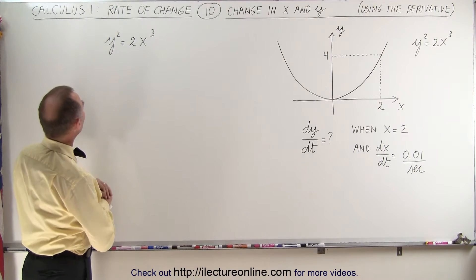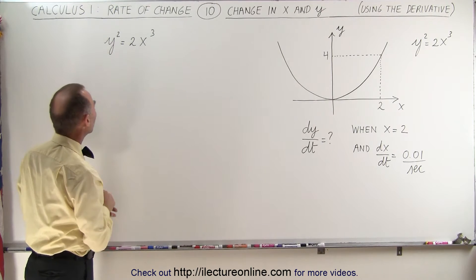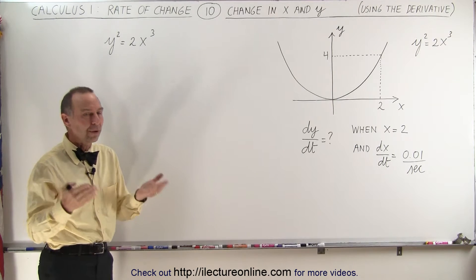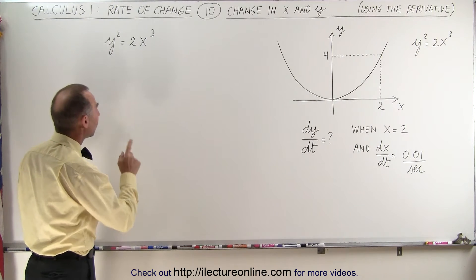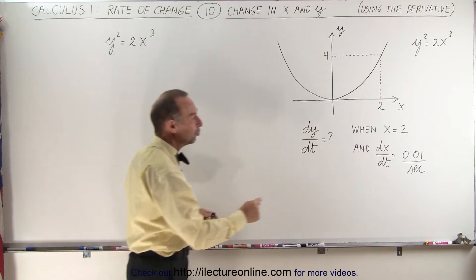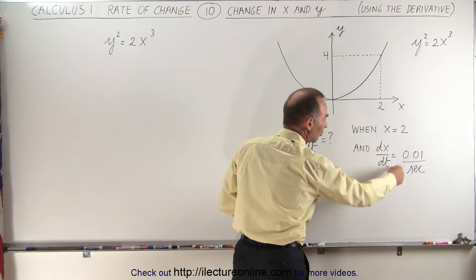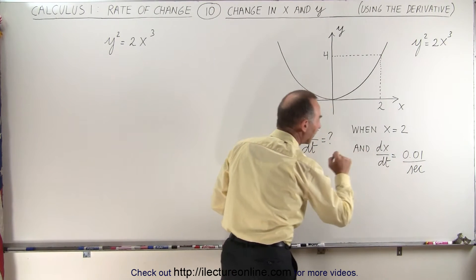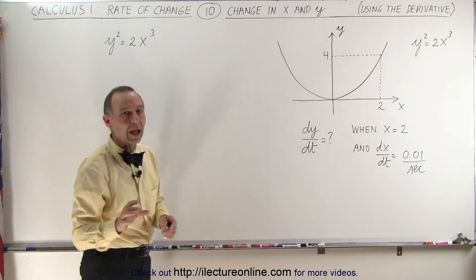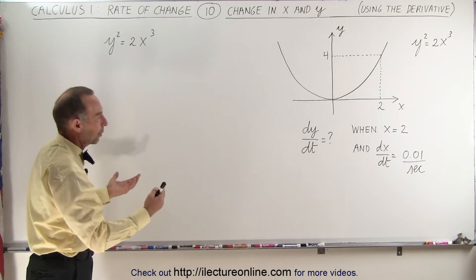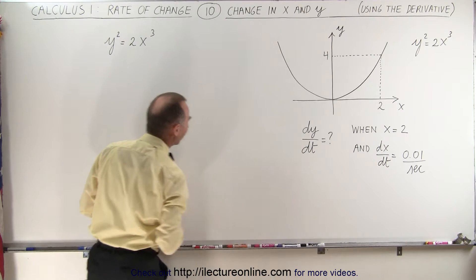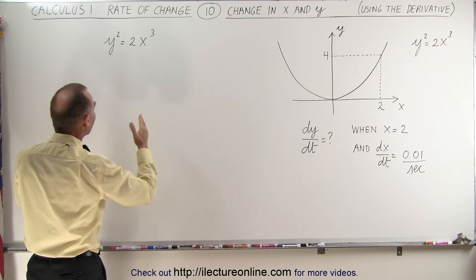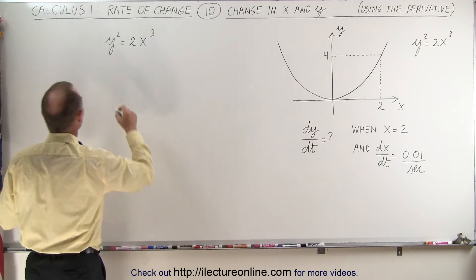The rate of change with respect to time — there's no t at all in our equation. How do we do that? Well, we simply take the derivative of both sides with respect to time, because we're given some information about how x changes with time, and from that we should be able to figure out how y changes with time. That's what we're looking for. Let's take the derivative of both sides of the equation with respect to time.